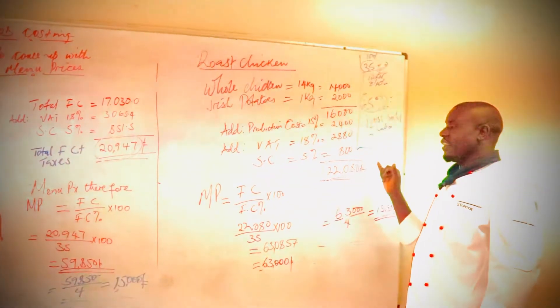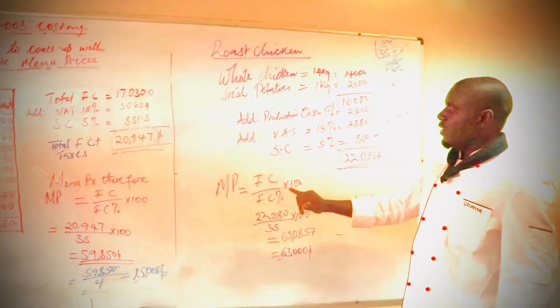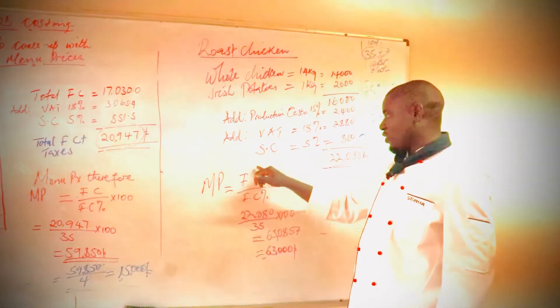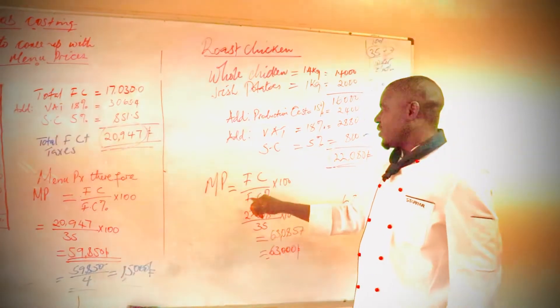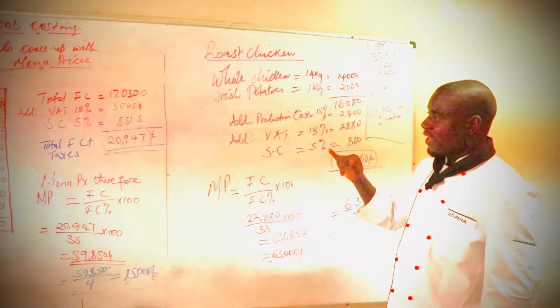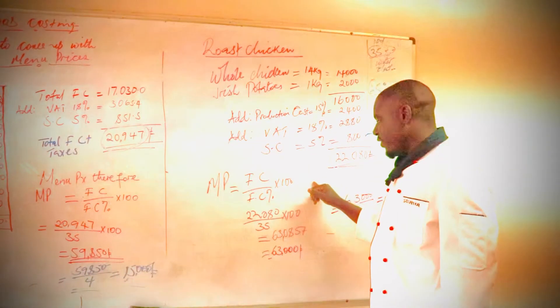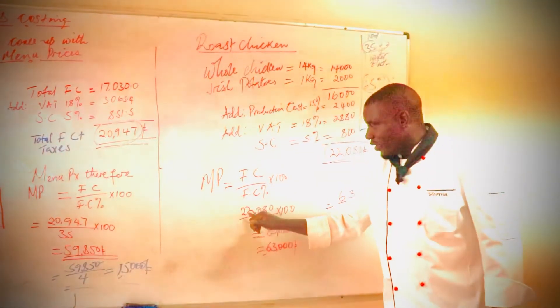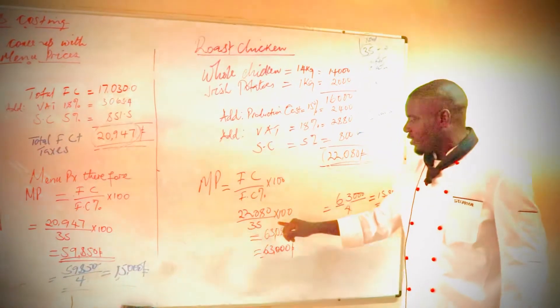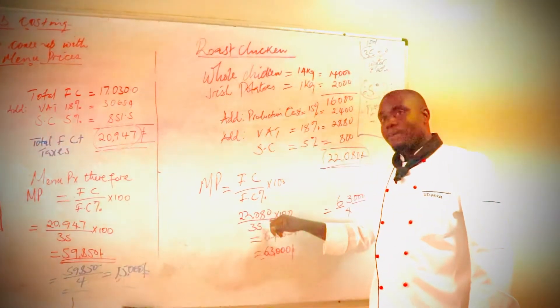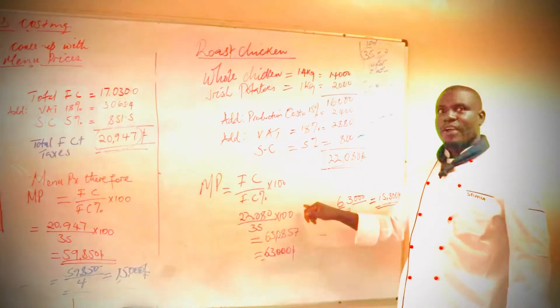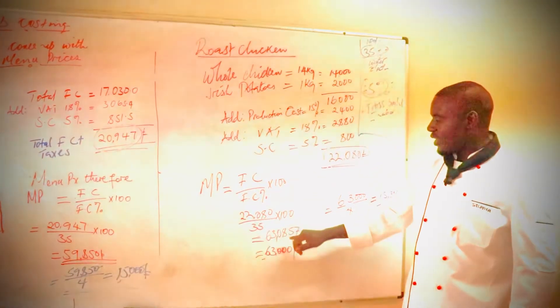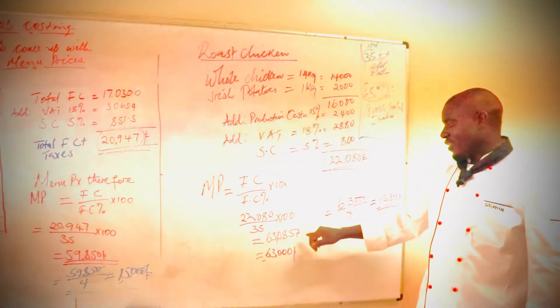So the total cost of the total production cost, which is 22,000, so when we count our menu price here, our menu price equals food cost divided by the food cost percentage, which is our 35% times 100.